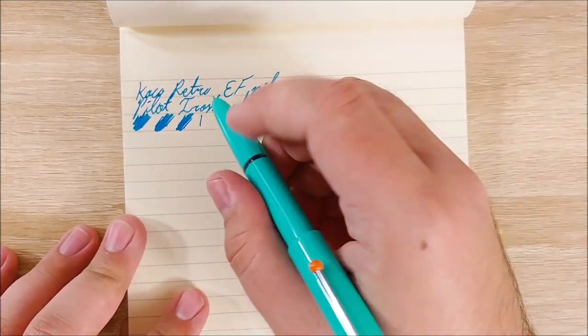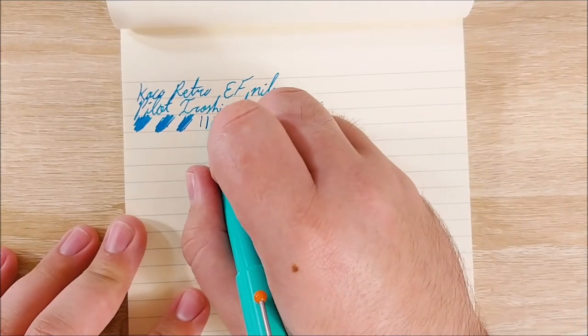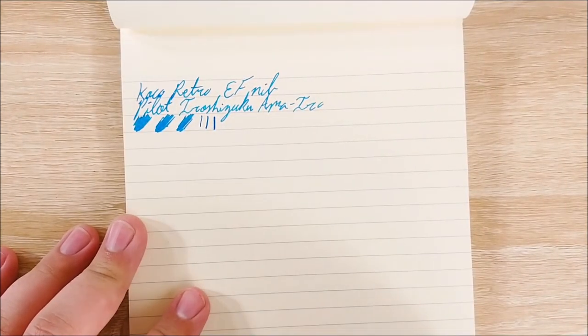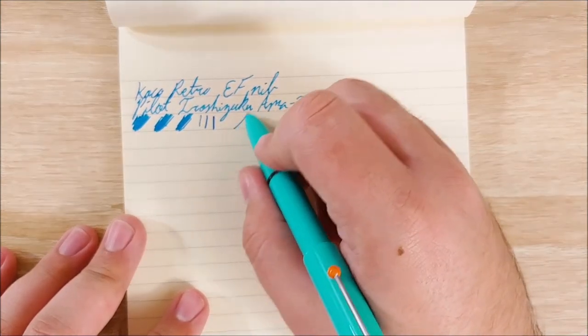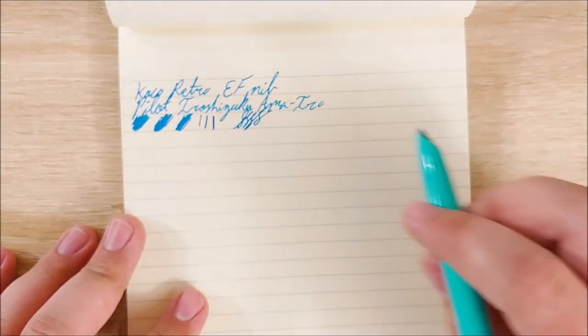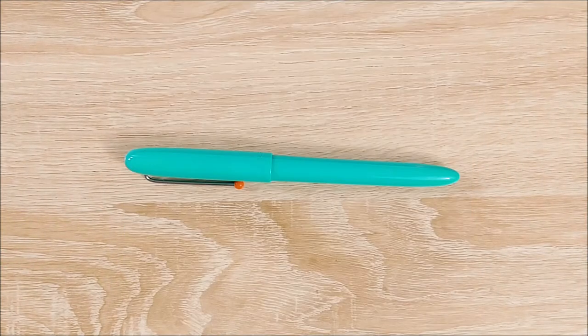So we have a reverse writing line. That one may be a bit more like an extra fine, a normal line, and then a line with some pressure. And you can see there's little to no variation with this. The nib just will not flex. It's a steel nib and it's hooded so you can't really expect too much out of it.